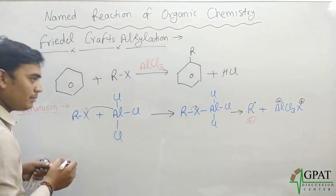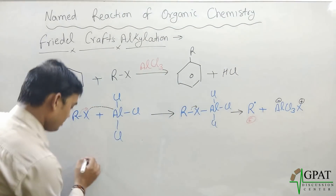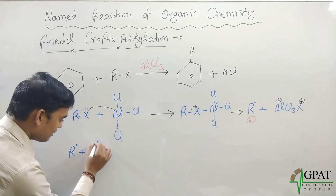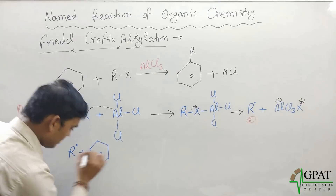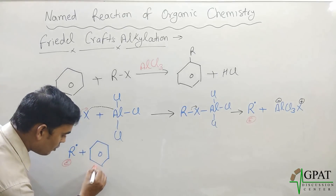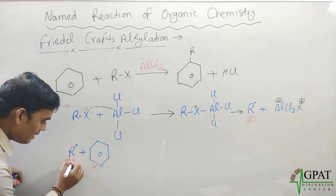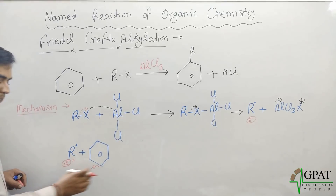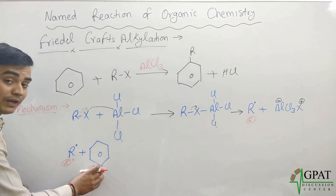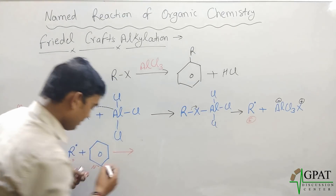So we get a carbocation and AlCl₄⁻ (where AlCl₄ carries a negative charge). This carbocation is reactive and electrophilic in nature. The benzene molecule is nucleophilic in nature — electrophilic means electron-deficient, and nucleophilic means electron-rich.